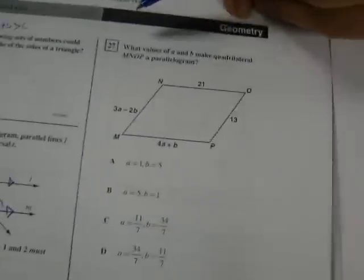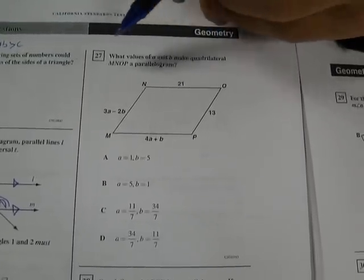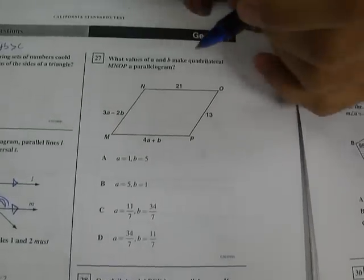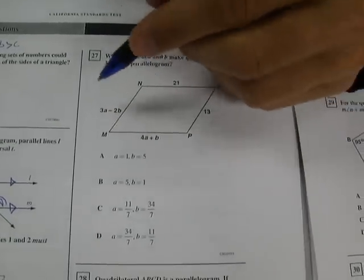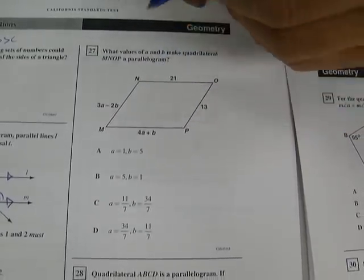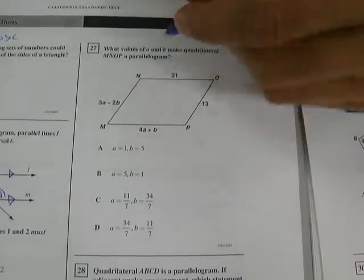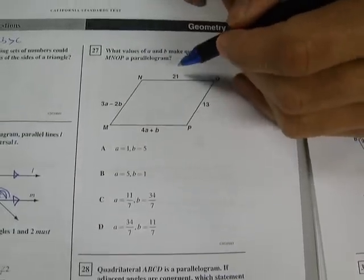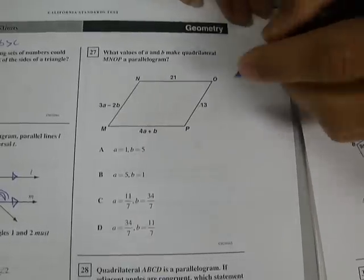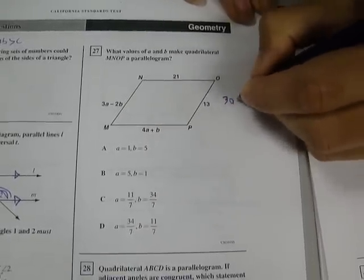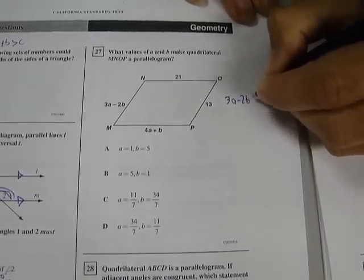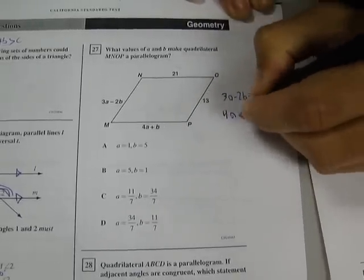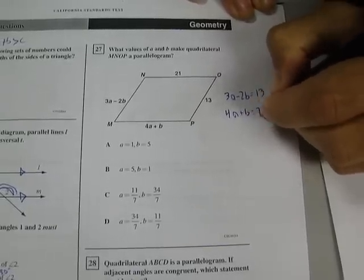Alright, let's look at problem 27. What values of A and B make quadrilateral MNOP a parallelogram? Okay, one of the things we need to think about about parallelograms is that opposite sides are congruent. So this is a little bit of a mathy one. It's kind of clever. We know that this side has to be congruent to this side, and this side has to be congruent to this side. So we're going to write two separate equations.